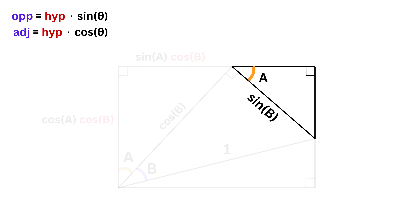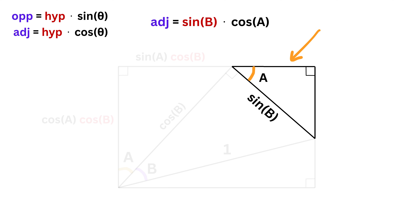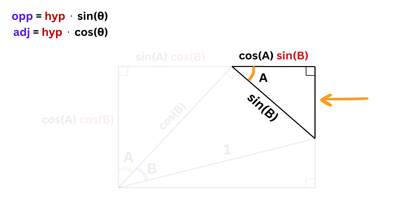Now, focus on this right triangle. This side is adjacent to angle A, and thus its length will be equal to cosA times the hypotenuse of this right triangle, which is sinB. So this side length will be equal to cosA times sinB. Then the opposite will be equal to sinA times sinB.